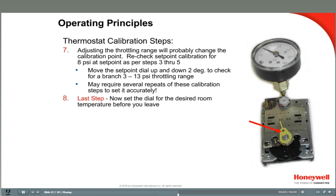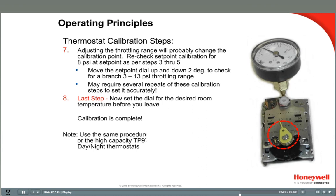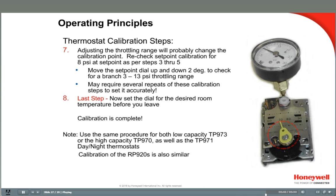The thermostat is now calibrated. Be sure to set the set point dial to the desired set point before leaving the room — remember, right now it is set at the ambient room temperature used for calibration, and that may not be the desired room temperature. You'll use the same procedures to calibrate other models of thermostats, and in fact the procedure for calibrating the RP920A is surprisingly similar to the TP970.